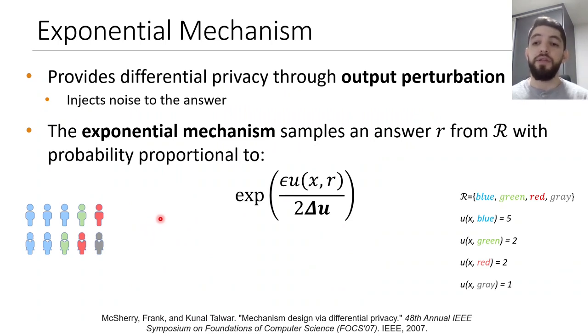In this setting, the exponential mechanism is the most well-known method to provide differential privacy. Specifically, it achieves differential privacy by perturbing the output with noise. The exponential mechanism samples an answer R from the range, with probability proportional to the exponential of the privacy budget, the utility score, over 2 times delta U, where delta U is the global sensitivity.